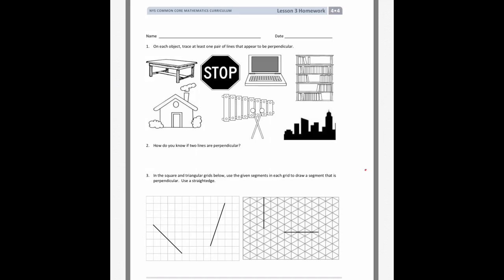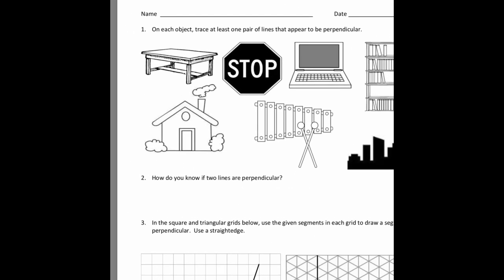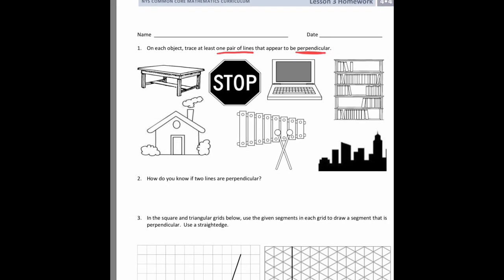Hey guys, I'm going to go over lesson 3's homework for module 4. And on this first problem it says, on each object trace at least one pair of lines that appear to be perpendicular. And we know that perpendicular means that the two lines meet at a 90 degree angle. They kind of look like a corner of a piece of paper.